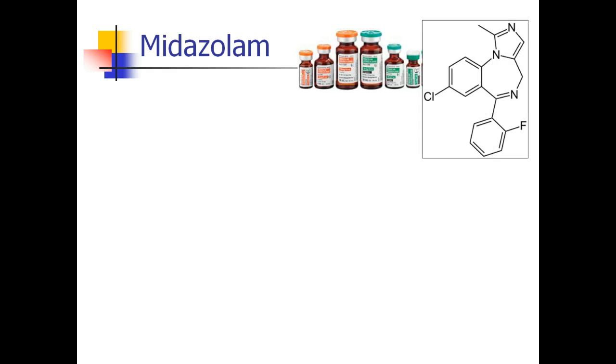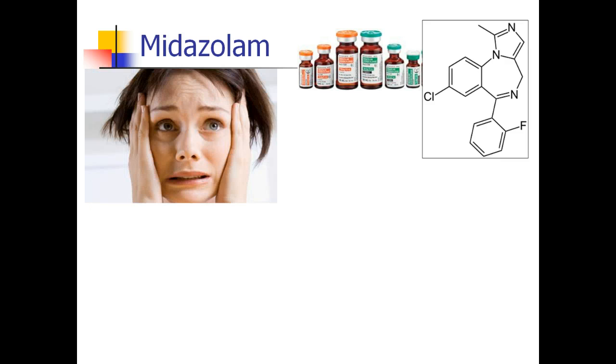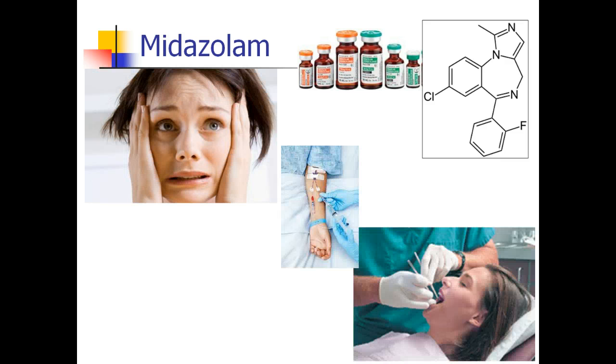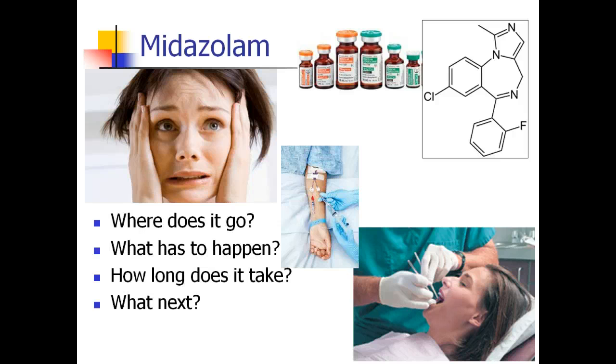We know that midazolam is this drug that comes in a vial, and somewhere in that vial is a molecular structure that looks kind of like this. If you take a patient who's really anxious and you give them some midazolam, then they become calm and relaxed, and they allow you to do things to them that their anxiety might prevent you from doing otherwise. This is a pretty fundamental basic view of things.